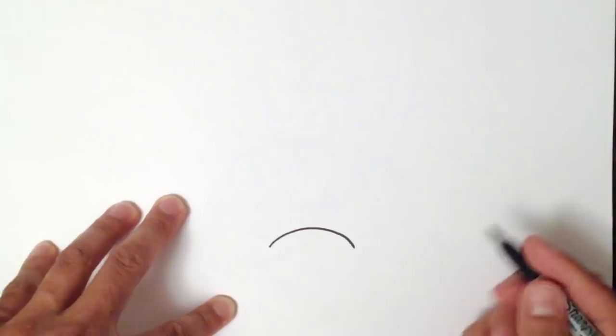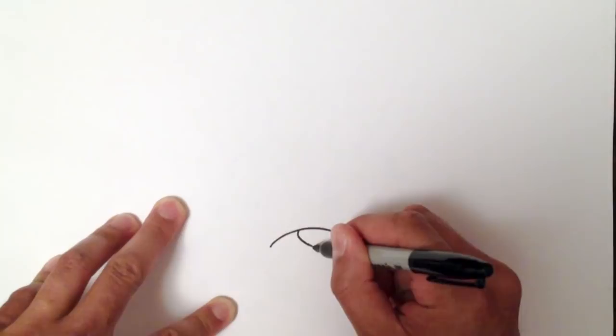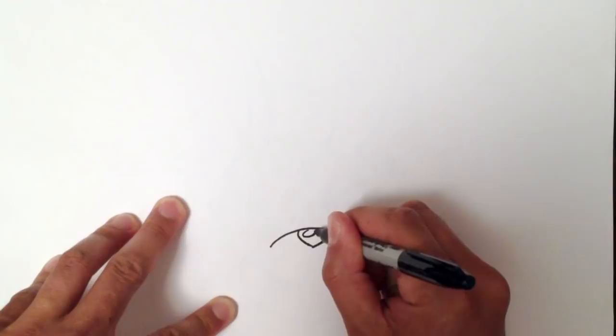So the bridge of the nose, I'm going to create a curve just like so. And on top of that, I'm going to draw a curve this way to a point, and then do the exact same thing on the opposite side.